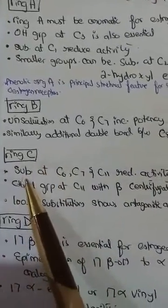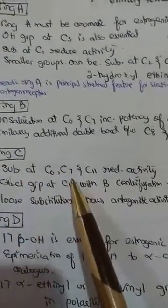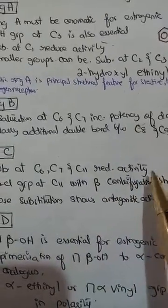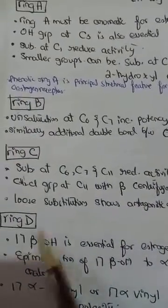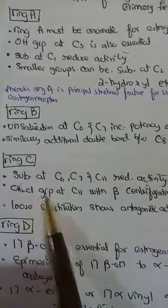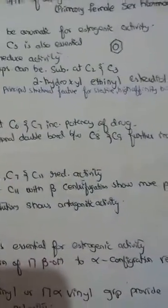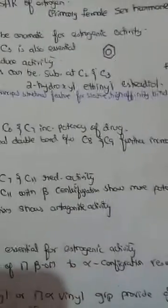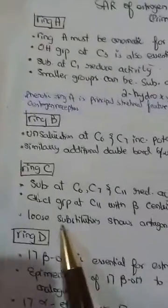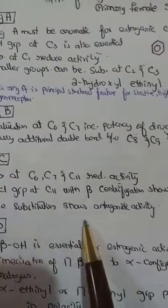A CH2Cl group at C11 with beta configuration shows more potent activity, but if there is a loose substitution, it will show antagonistic activity.